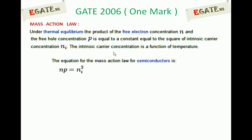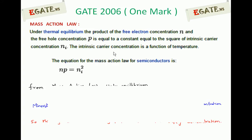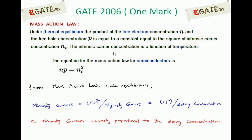But the right-hand side is always Ni². So we can state the same equation in terms of extrinsic semiconductors as: the product of minority carrier concentration and majority carrier concentration is always equal to the square of intrinsic carrier concentration. Under equilibrium, from the mass action law for extrinsic semiconductors, minority carriers can be written as Ni² divided by majority carriers, i.e., Ni² divided by doping concentration.